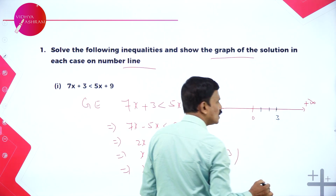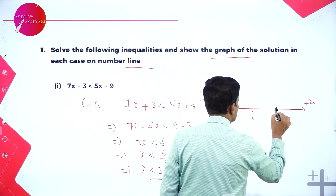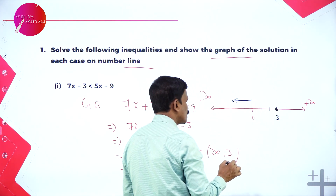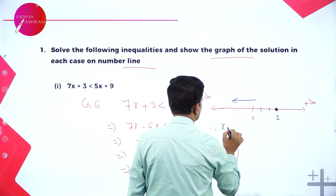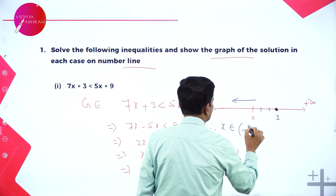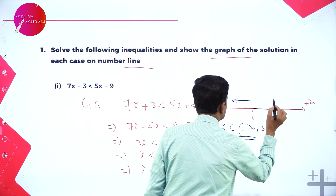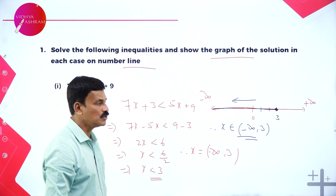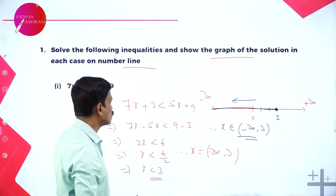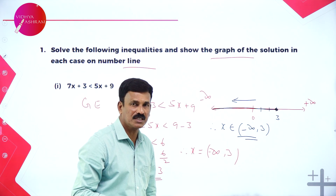So x is less than 3. On the number line, all the values less than 3 come towards minus infinity. Therefore, x belongs to minus infinity comma 3 is the solution set. This is the graphical representation of the solution set for the given inequality 7x + 3 < 5x + 9.